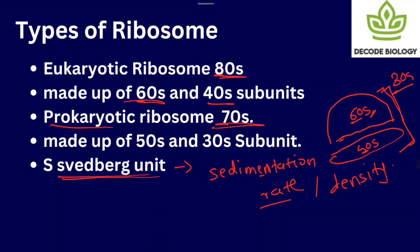The prokaryotic ribosome is 70S. It also has two subunits: the large subunit is 50S and the small subunit is 30S. When both subunits combine, the result is 70S. These subunits — 60S and 40S for eukaryotes, or 50S and 30S for prokaryotes — bind together to form the complete ribosome. This binding is very necessary.